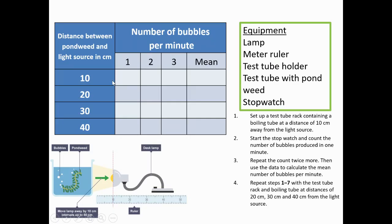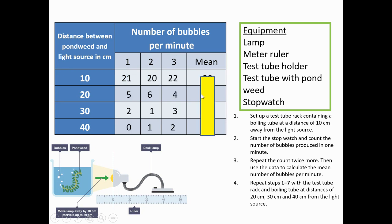Focus on the table. Down one side we have the distance between pond weed and light source — the independent variable — at 10, 20, 30, and 40 centimetres. Across the top you have space for first try, second try, third try, and mean. Please pause the video and calculate the means. A mean is an average — add the values up and divide by how many there are. The mean number of bubbles per minute at 10 centimetres is 20, at 20 centimetres is 5, at 30 is 2, and at 40 there is 1 bubble per minute on average.